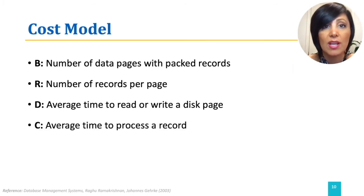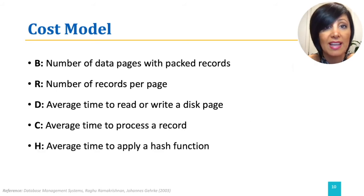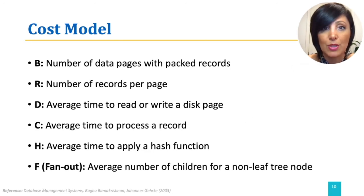Processing a record includes operations like comparing a record field to a constant value. We also use parameters that are useful only for certain index operations and organizations. For example, H for the average time required to apply the hash function to a record in a hashed index, and F to denote the fanout, which is the average number of children for a non-leaf tree node.